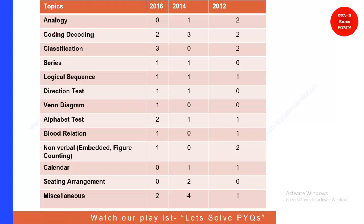These are the important topics that we have seen in past exams — specifically the exams held in 2016, 2014, and 2012. The very first topic is Analogy. In 2016 we have not seen any question on analogy, but in 2012 and 2014 we have seen 1 to 2 questions. So you can expect at least 2 questions from this topic.